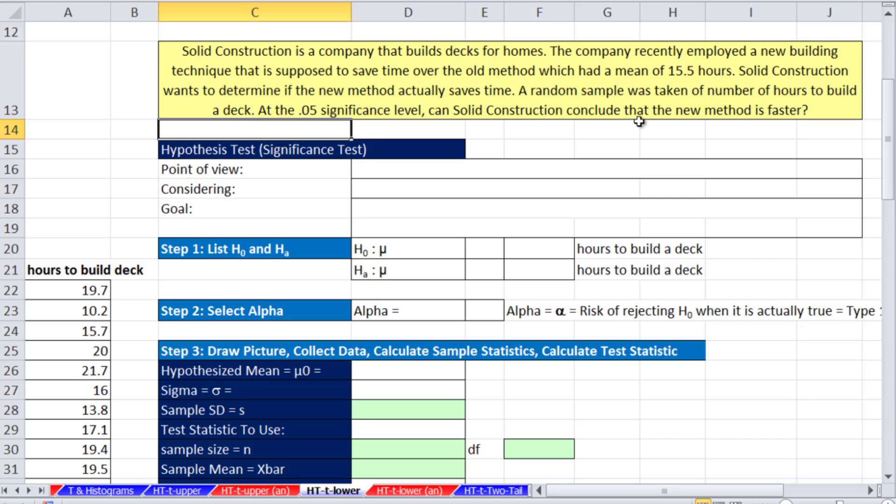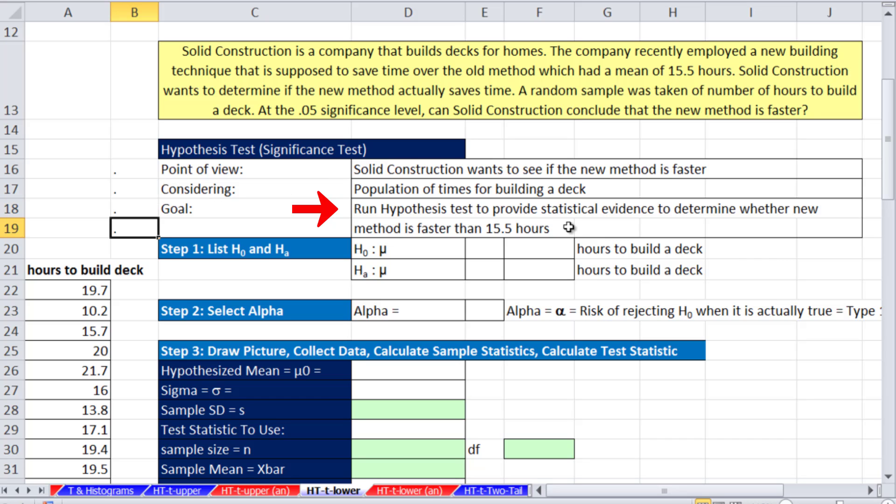Just like we've done in the five previous videos for hypothesis testing, we want to talk about point of view, what we're considering, and goal. The point of view is Solid Construction Company. They want to see if the new method is faster. We are considering the population of times for building a deck, and our goal is to run a hypothesis test to provide statistical evidence to determine whether the new method is faster than 15.5.